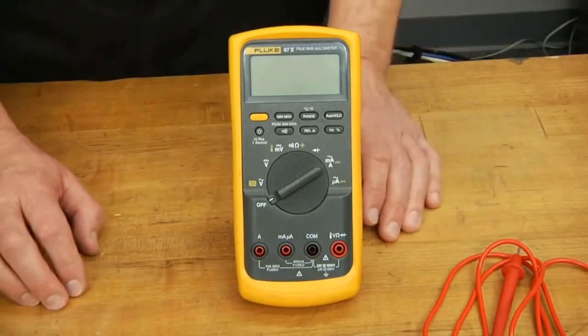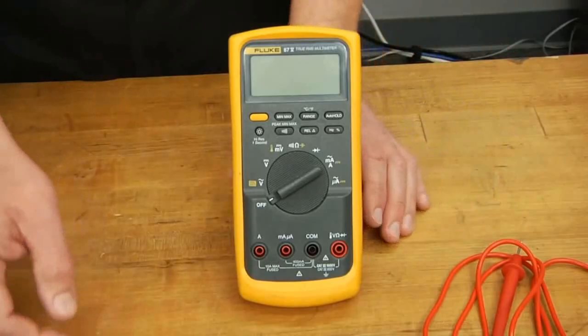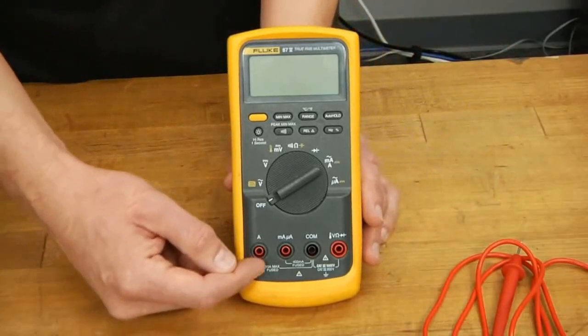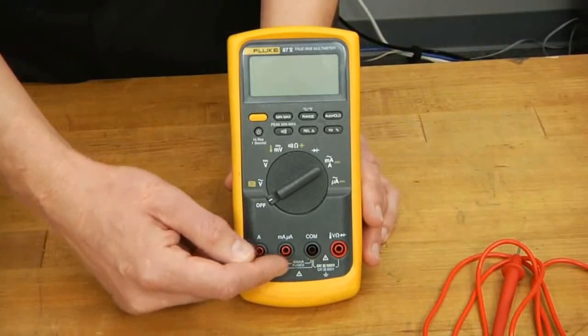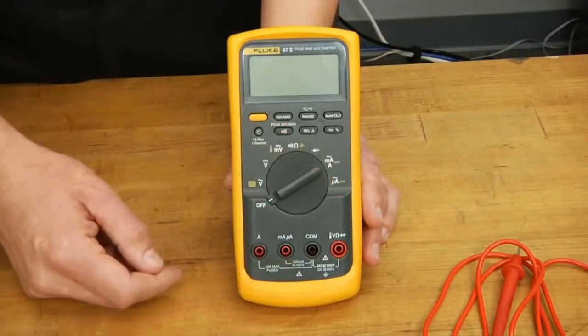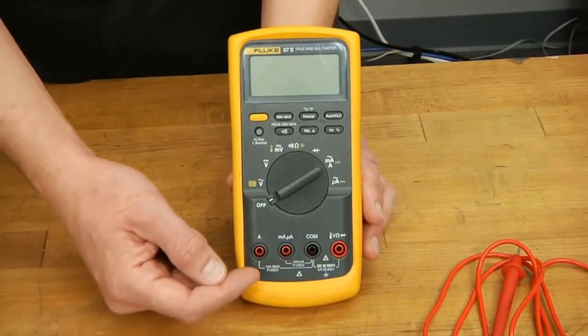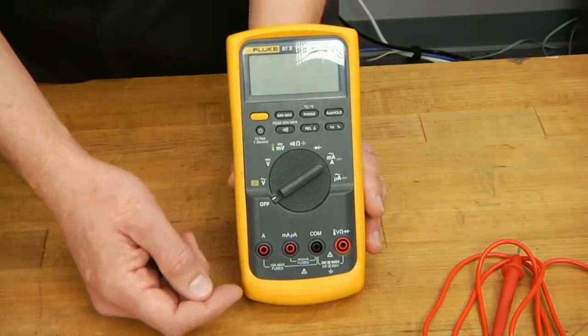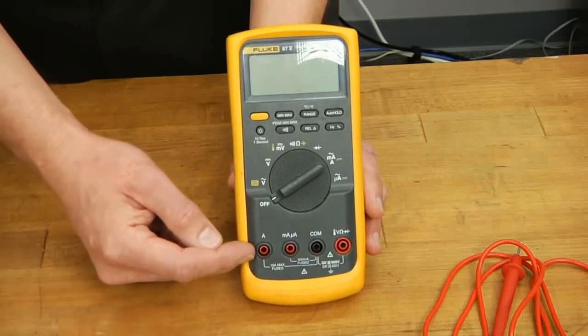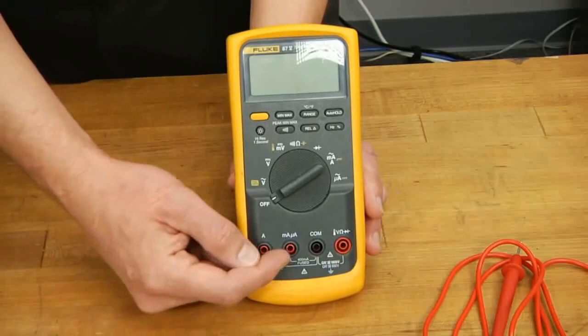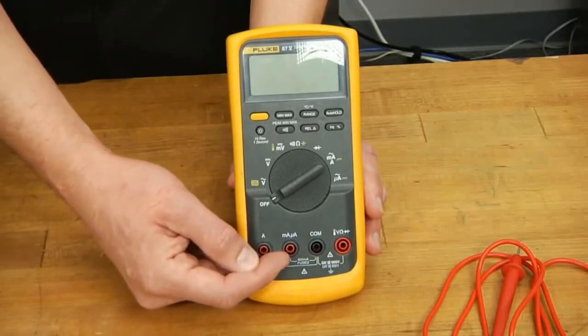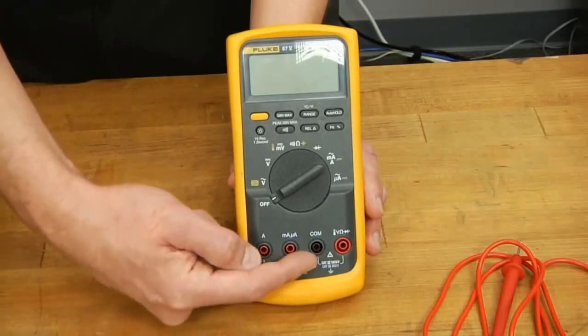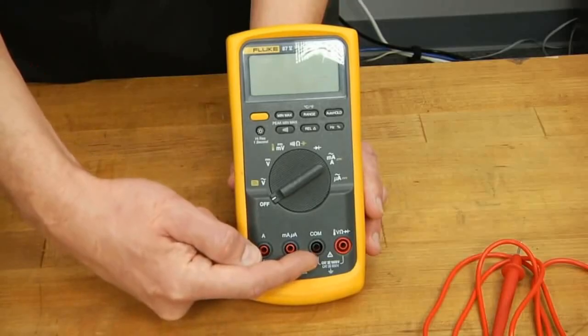The important points that you want to understand about the meter are the input jacks here and here and the rotary dial. As far as the input jacks are concerned, the main two that you'll be using are the amps terminal and the milliamp and microamp terminal. You will also be using the common port to complete our path.